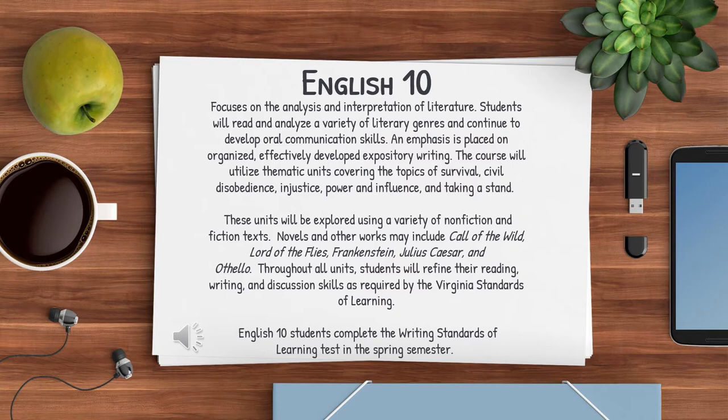Novels and other works may include Call of the Wild, Lord of the Flies, Frankenstein, Julius Caesar, and Othello. Throughout all units, students will refine their reading, writing, and discussion skills as required by the Virginia Standards of Learning. English 10 students complete the writing standards of learning test in the spring semester.